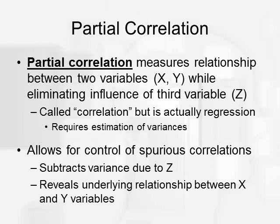Next, I want to talk very briefly about partial correlation. Partial correlation is incredibly useful. It's when you can measure a relationship between two variables while eliminating the influence of a third variable. We call this a partial correlation, but it's actually regression. We're going to be estimating variances and so on. Now we talked about spurious correlations before. When you have a relationship between X and Y that is actually due to Z.